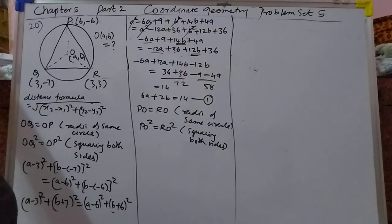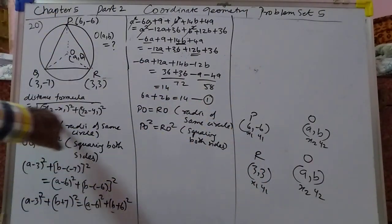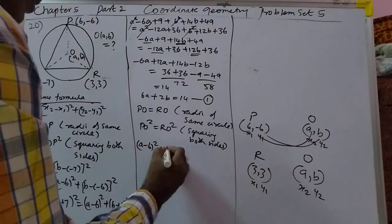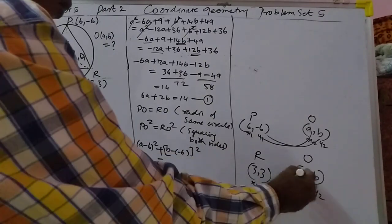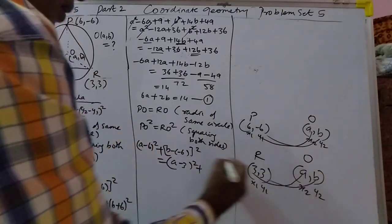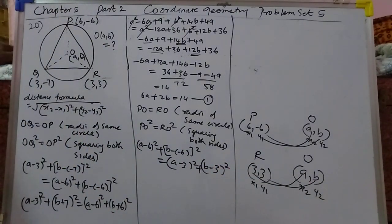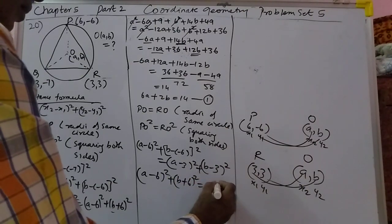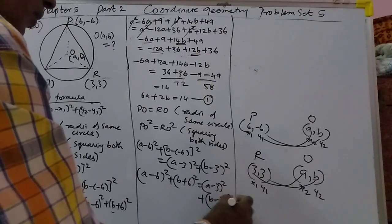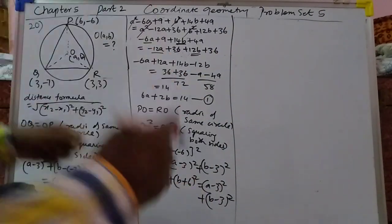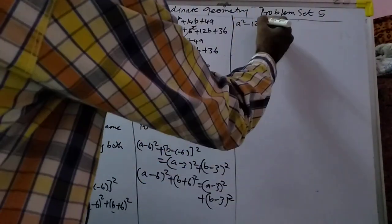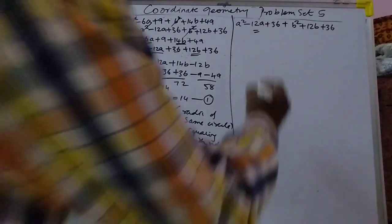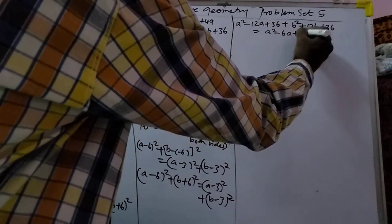We have the points and the formula. So it becomes (A minus 6) whole square plus (B minus of minus 6) whole square, that is equal to (A minus 3) whole square plus (B minus 3) whole square. We will expand: A² minus 12A plus 36 plus B² plus 12B plus 36, that is equal to A² minus 6A plus 9 plus B² minus 6B plus 9.